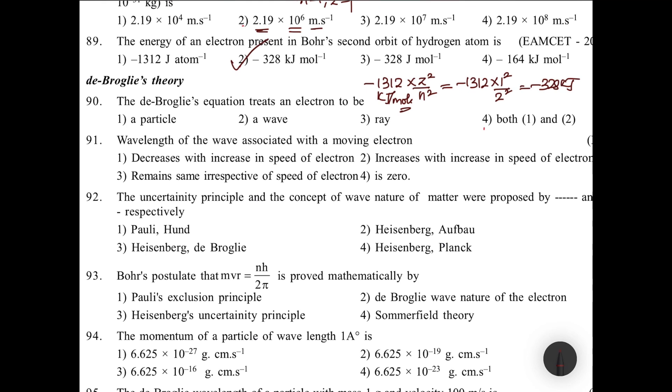89th question done. De Broglie theory: one question we'll take, and from 91 onwards we'll discuss in another video. De Broglie's equation treats an electron as having wave nature and particle nature. According to de Broglie, all micro particles moving with very high velocity will have dual nature: particle nature as well as wave nature. So both one and two. Thank you.